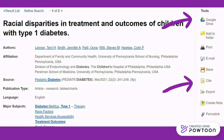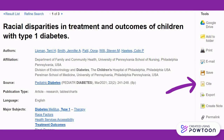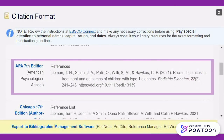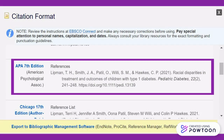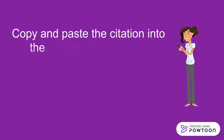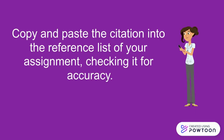The Tools menu has several options to save the article and to create citations. Use the Cite feature to create a citation in any major format. Clicking on the Cite option in the Tools menu will open up a new screen with options to cite this article in different citation styles. APA 7 is shown here. Copy and paste the citation into the reference list of your assignment, checking it for accuracy.